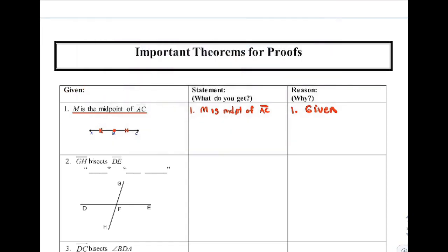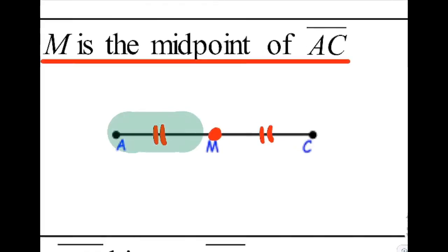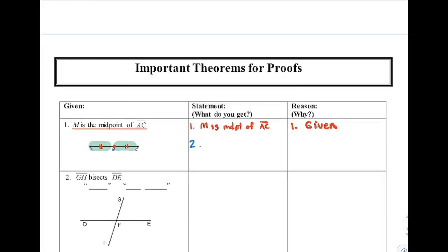Now there's a second statement you can make. Once M is the midpoint of AC, that forces this to be congruent to this. So you can now say AM is congruent to CM. Why is that true? It's because we know that a midpoint divides a segment into two congruent parts. So that's the reason.